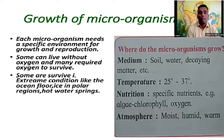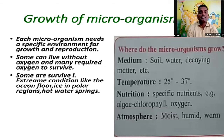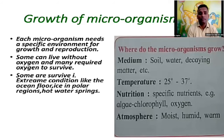Some microorganisms can live without oxygen, and many require oxygen as we do, to survive. Some microorganisms can survive in extreme conditions — for example at high temperatures, on the ocean floor, in ice in the polar regions, and in hot water springs. There are many varieties of microorganisms found on the ocean floor.